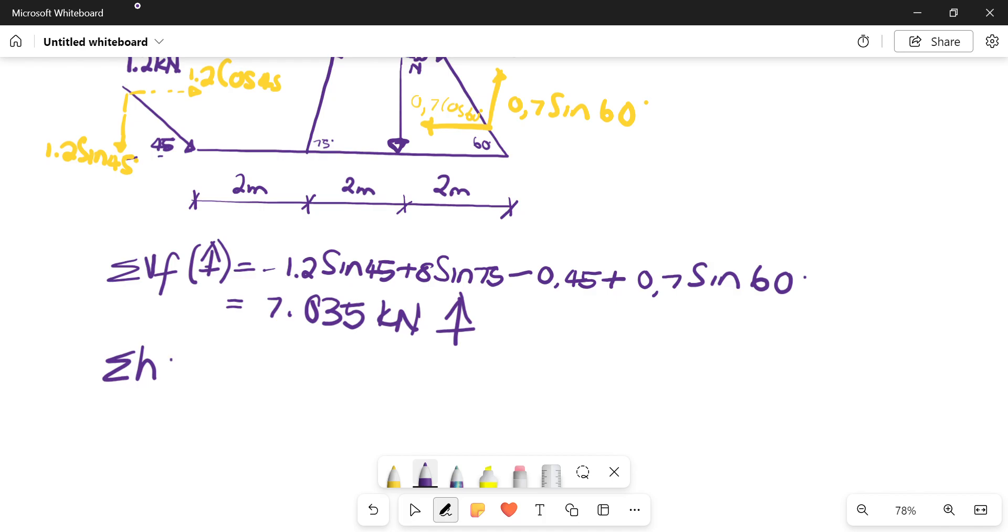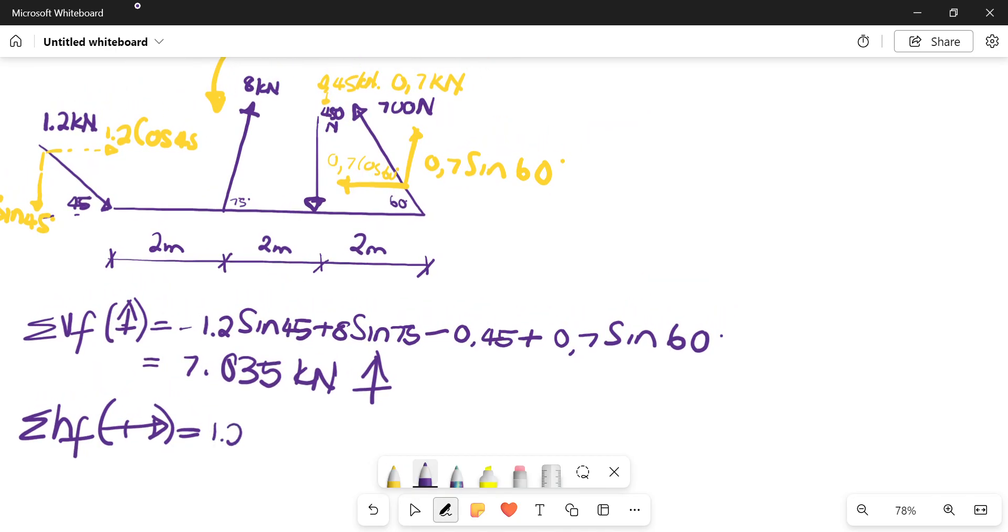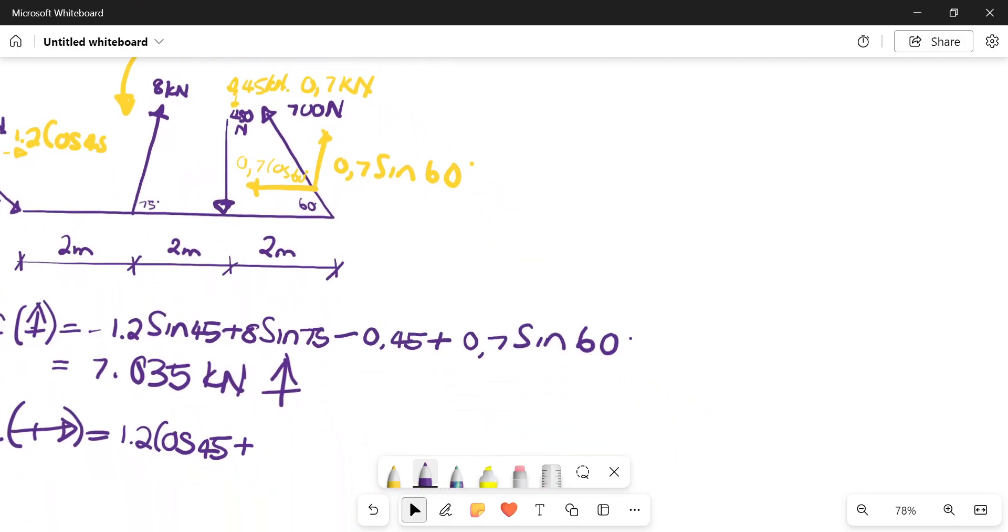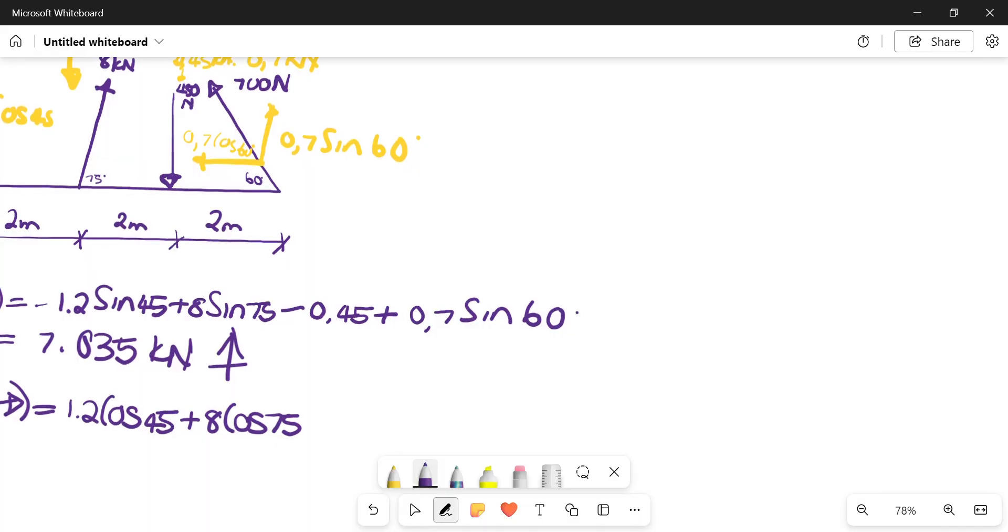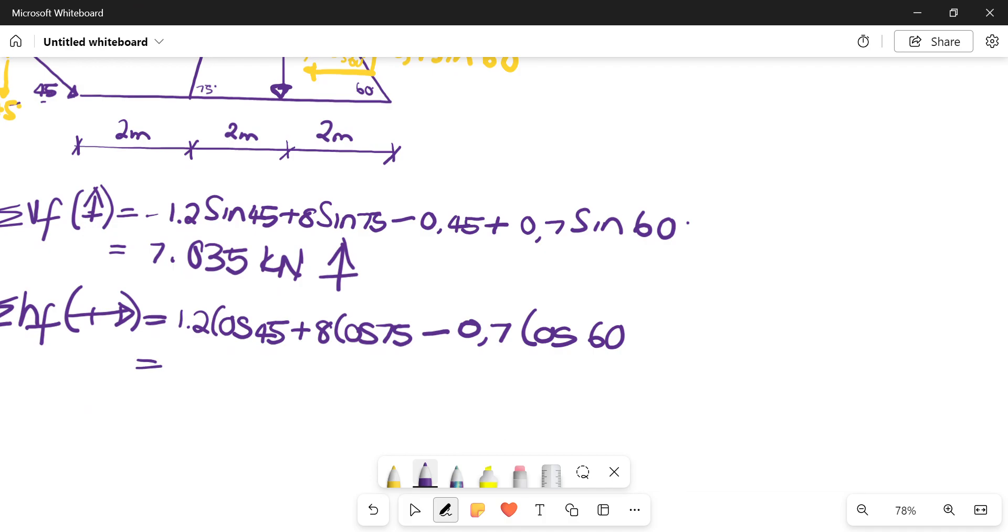Similarly, you'll take the sum of the horizontal forces. We could assume that it might react going to the right. Then we have 1.2 cos 45, then plus 8 cos 75, minus 0.7 cos of 60. I get 2.569, like 2.57 kilonewtons, and it's positive, so it means it is indeed going in that direction.